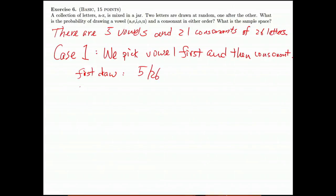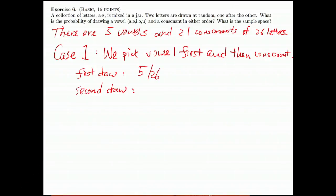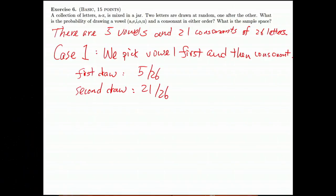And the second draw is consonant. So it's 21 over 26. Because the sample space is 26 for each draw.